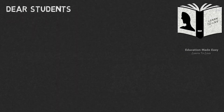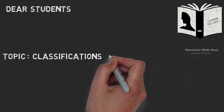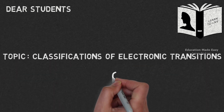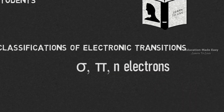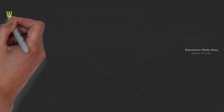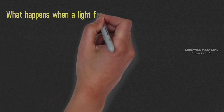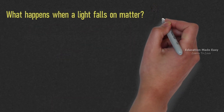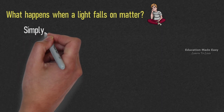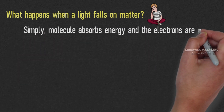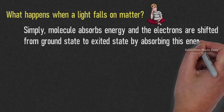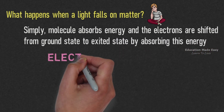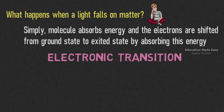Dear students, welcome to Learn to Live. This video is based on the topic classifications of electronic transitions caused by sigma, pi and n electrons. When light falls on matter, molecules absorb energy and electrons are shifted from ground state to excited state by absorbing this energy. This is also known as electronic transition.